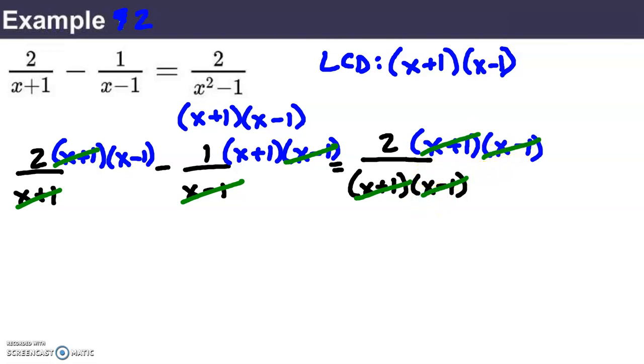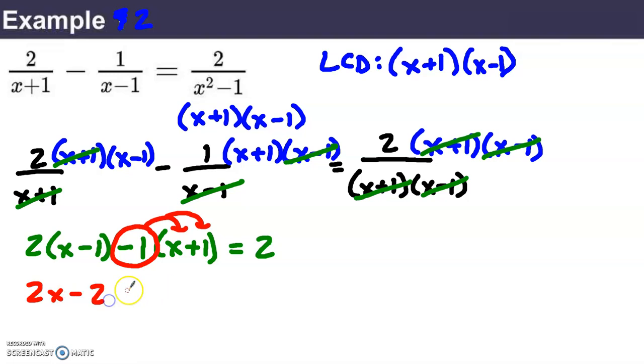We have a much simpler equation now. So, I've got 2 times x minus 1. Be really careful with this sign here. Minus 1 times x plus 1 equals 2. So 2x minus 2 minus x minus 1 equals 2. 2x minus x is simply x. Negative 2 minus 1 is negative 3. And if x minus 3 equals 2, what does x equal? I think x is 5.